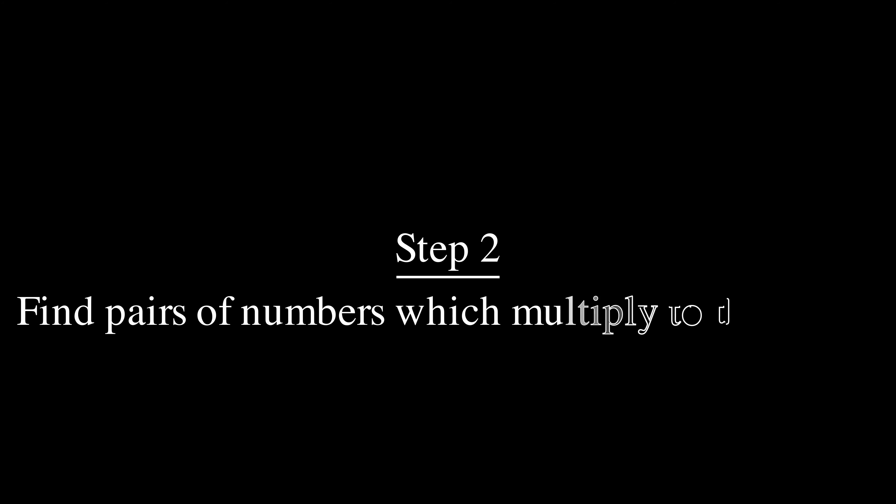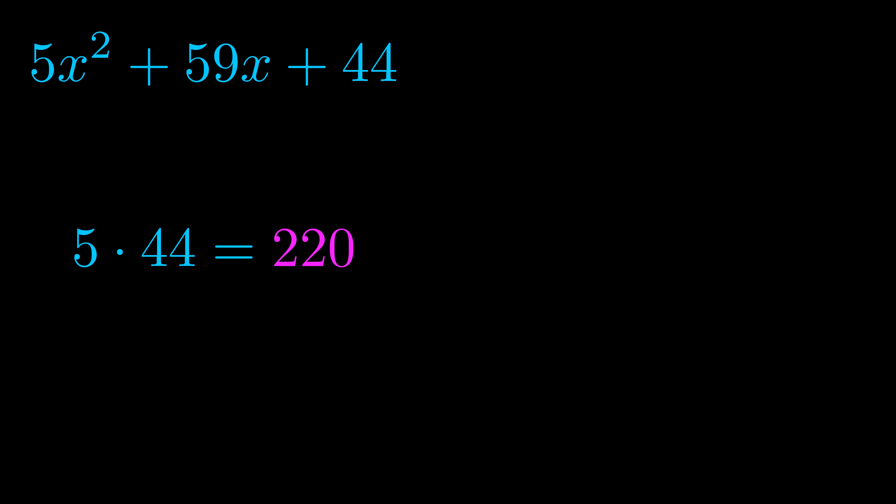Step two is to try to find all of the pairs which multiply to this number. Now turns out you don't really need to find all of them but go ahead and write down as many numbers as you can that multiply to the magenta value for now. Pause the video and resume when you're ready to continue.